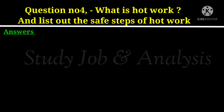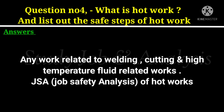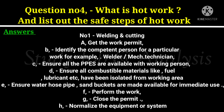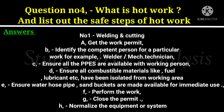Question number 4: What is hot work? And list out the safe steps of hot work. Any work related to welding, cutting, or high temperature fluid related works. JSA — Job Safety Analysis of hot works. Number 1: Welding or cutting. A. Get the work permit. B. Identify the competent person for a particular work, for example welder, mech technician. C. Ensure all the PPEs are available with the working person. D. Ensure all combustible materials like fuel, lubricant, etc. have been isolated from the working area. E. Ensure water hose pipe and sand buckets are made available for immediate use. F. Perform the work. G. Close the permit. H. Normalize the equipment or system.